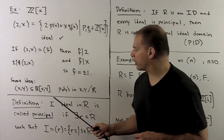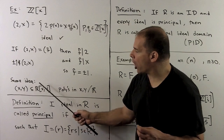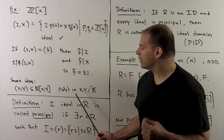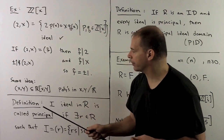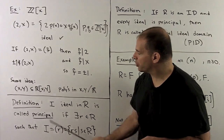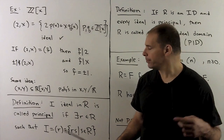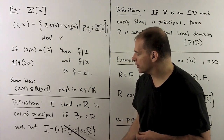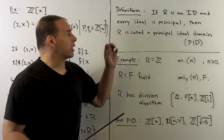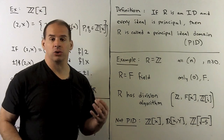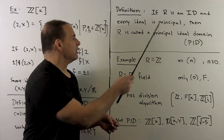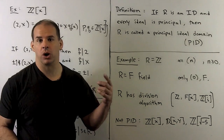The same argument shows that the ideal generated by x and y in ℝ[x,y] — all polynomials in x and y with coefficients in ℝ — cannot be written as generated by a single element either. Definition: an ideal I in R is principal if there exists some element r in the ring such that I is generated by r, i.e., we're taking all multiples of r. If R is an integral domain and every ideal is principal, we call R a principal ideal domain, or PID for short.